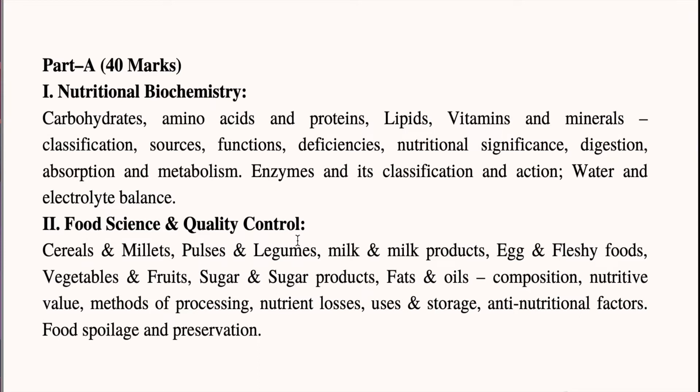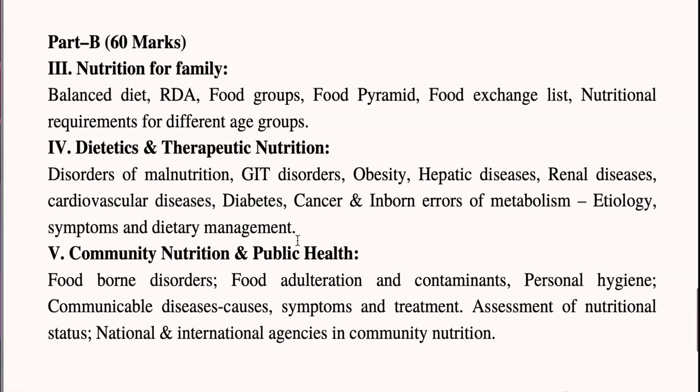The second unit in Part A is Food Science and Quality Control. You need to learn the composition, utility value, methods of processing, nutrient losses, and uses and storage of all vegetables, cereals, food and food products, along with anti-nutritional factors, food spoilage, and preservation.